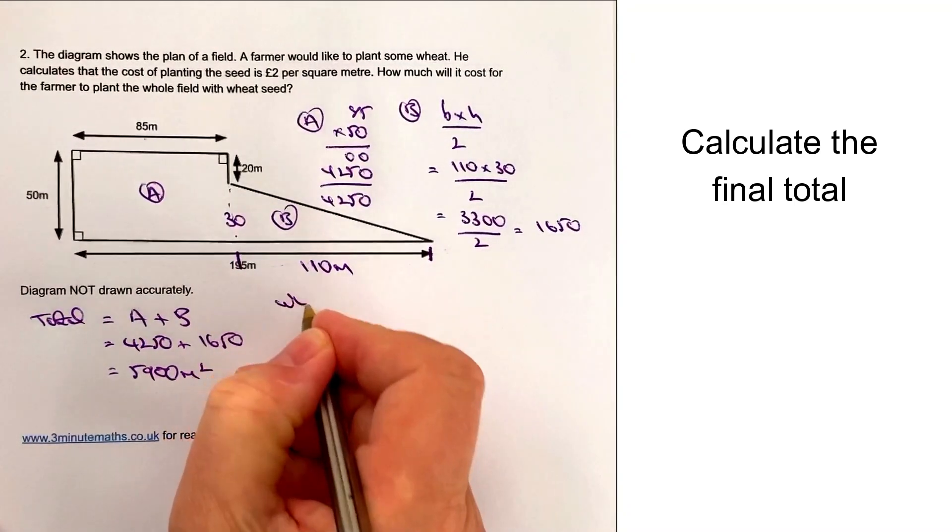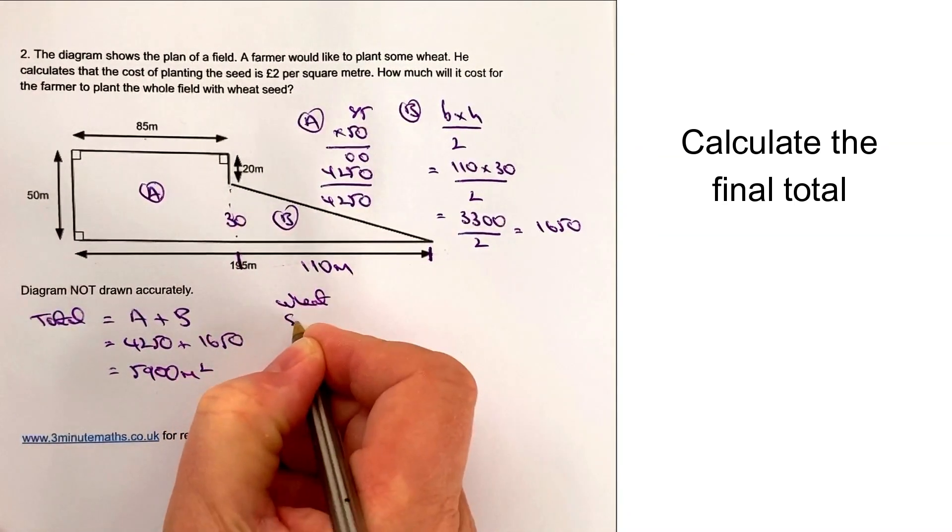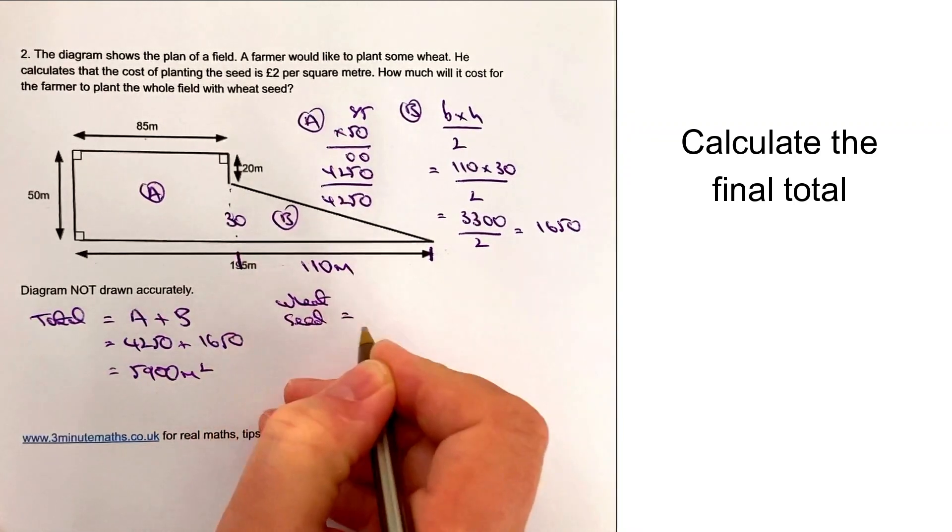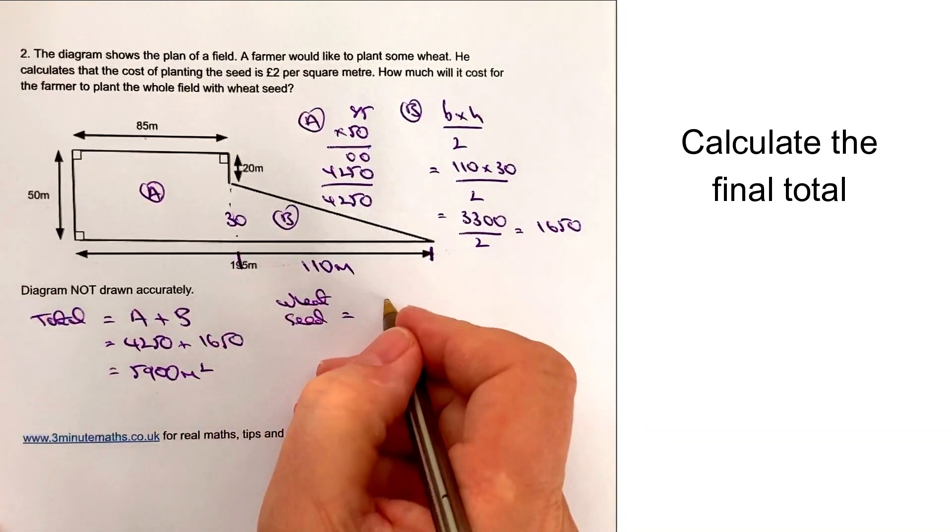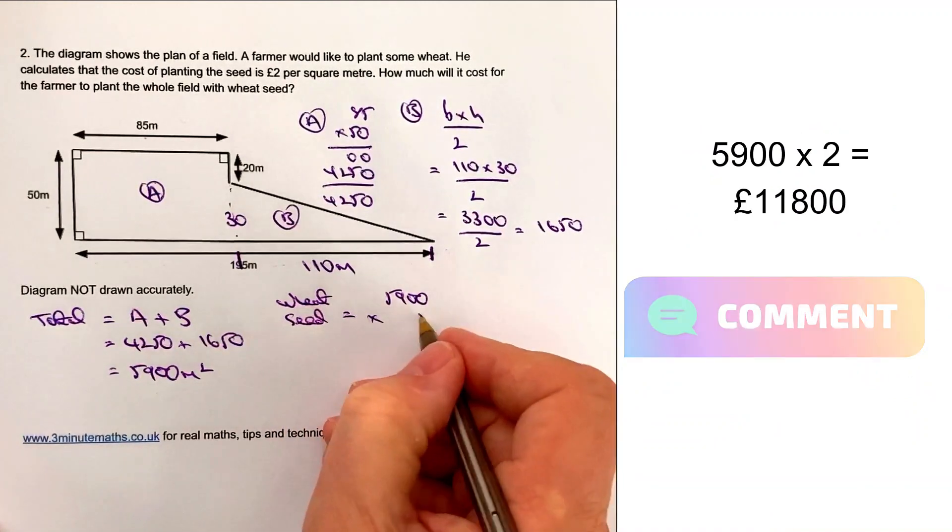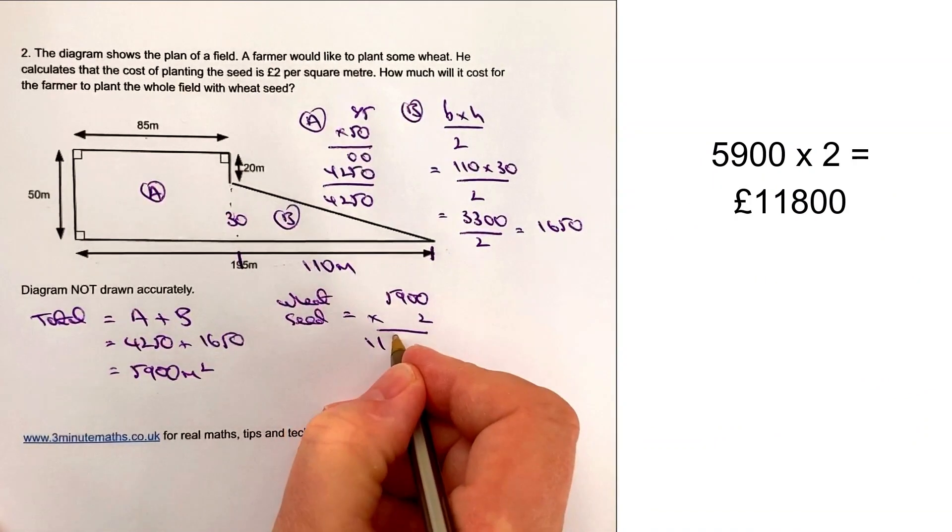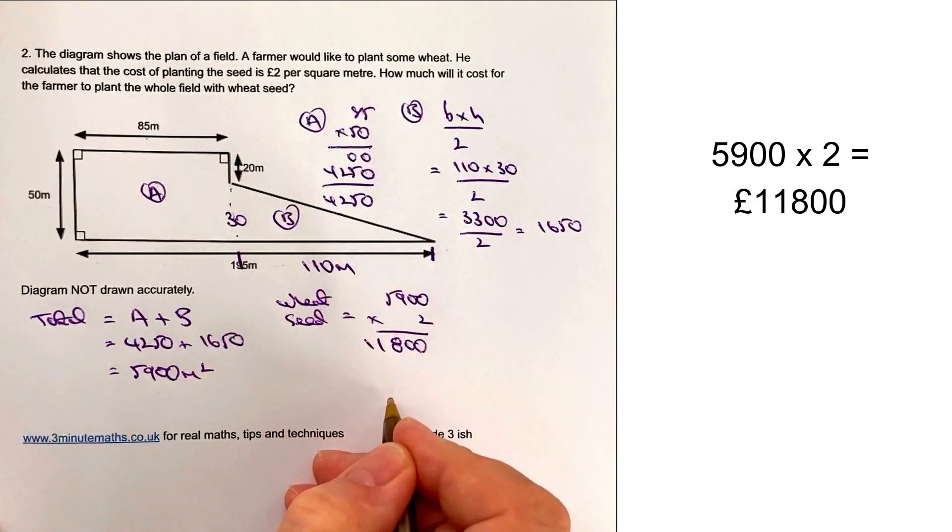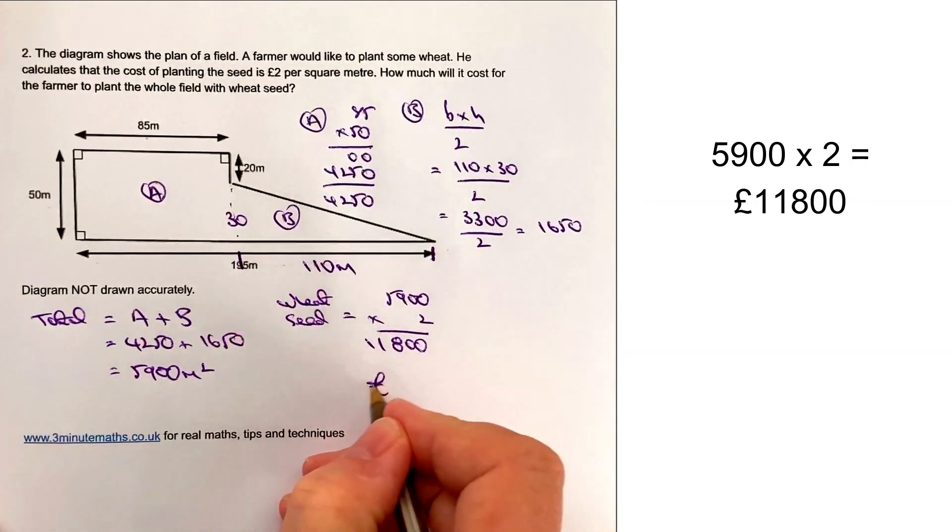The wheat seed planting cost—I'm assuming that's not just the actual seed but probably the cost of a combine harvester or tractor to actually plant all of this seed—gives you a grand total of £11,800, which seems to me an awful expense.